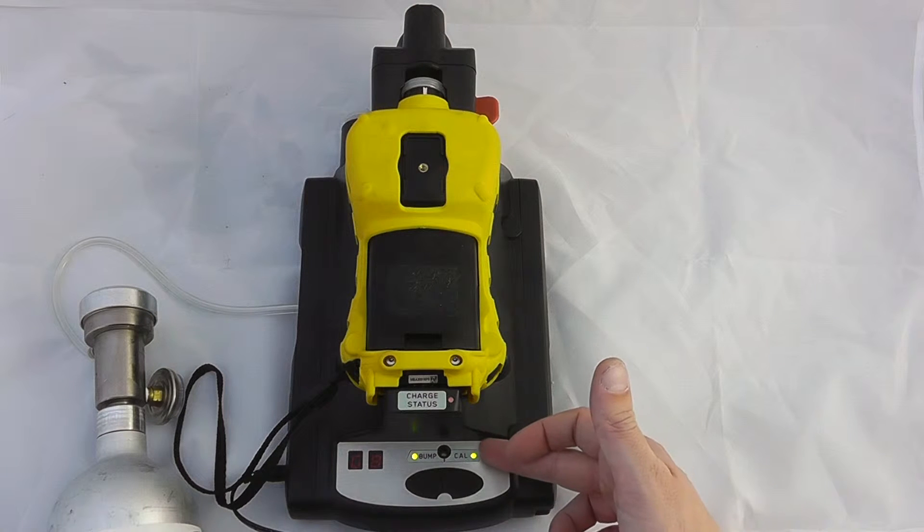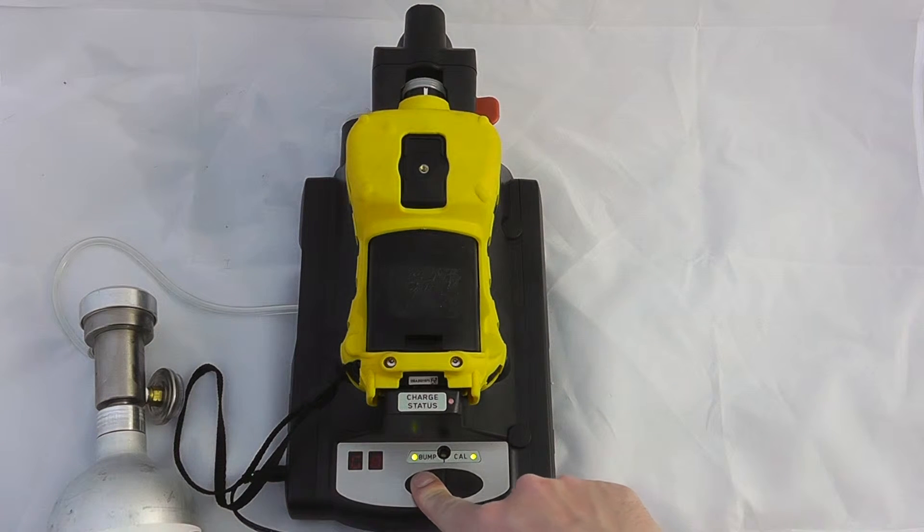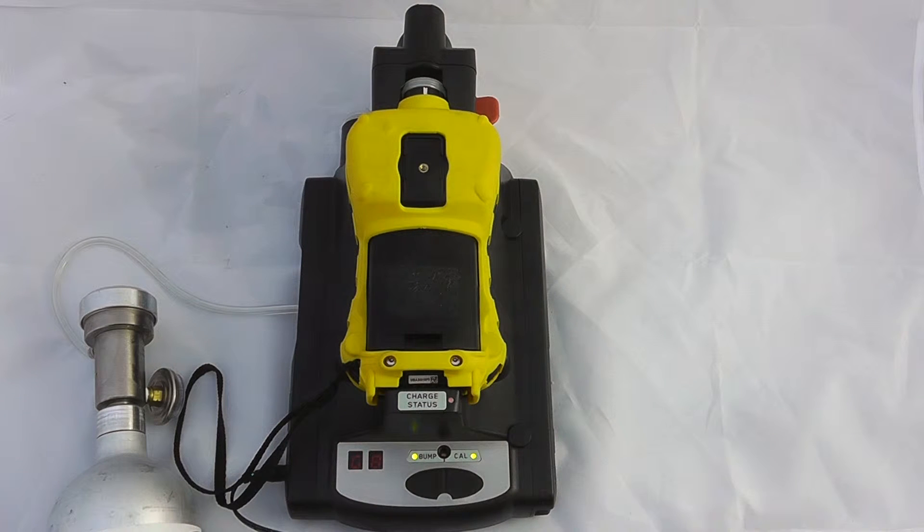Now we have the two green lights on the device so this gives us an opportunity to either bump or calibrate. It is important that there can sometimes be a slight delay on response. It's press and hold for a single bump and then it will go through a bump test.